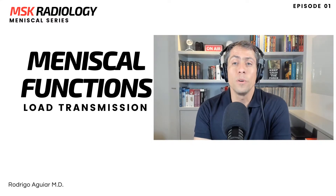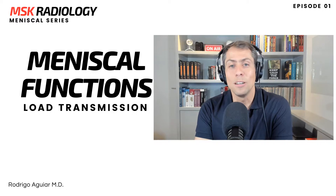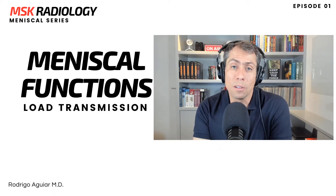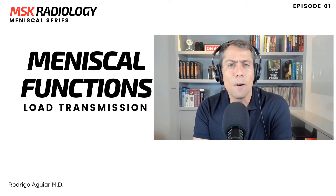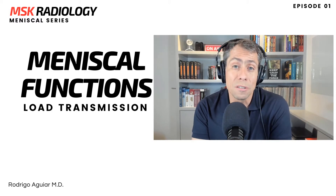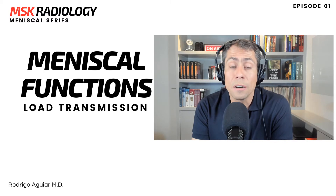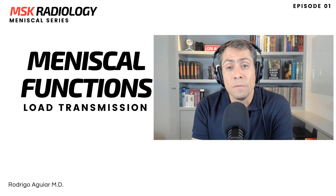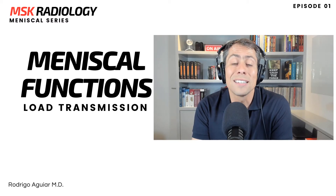In these last few minutes, we have revealed the primary meniscus function — the most important meniscus function, load transmission. We also went over important concepts such as hoop stress and the meniscal circumferential fibers. Being aware of these concepts will be crucial for a better understanding of why some meniscal lesions we will see in the future are so dangerous to the knee. If you liked the video, please share it with your friends, subscribe to the channel, and press the bell button to get notified about new videos coming out soon.